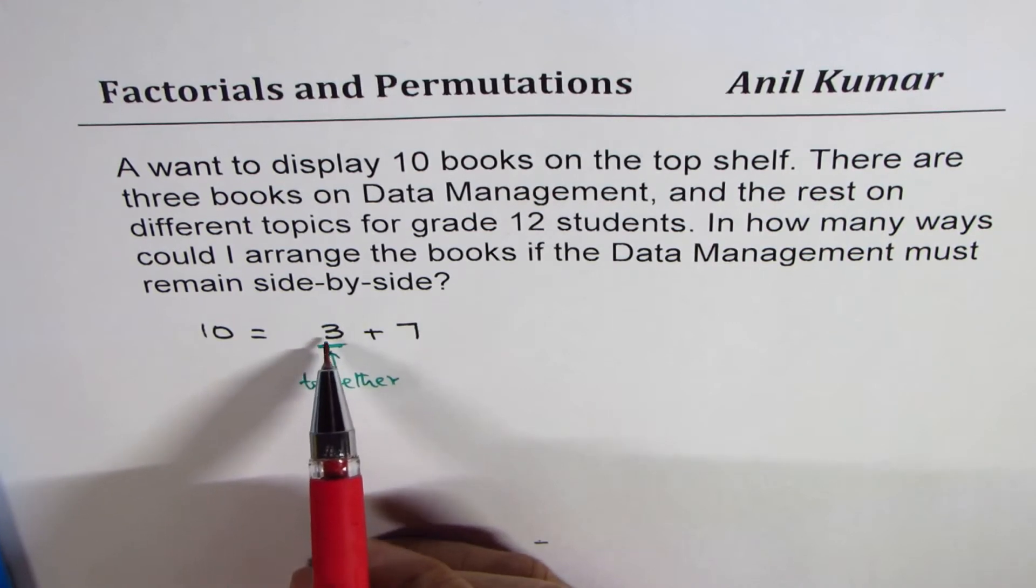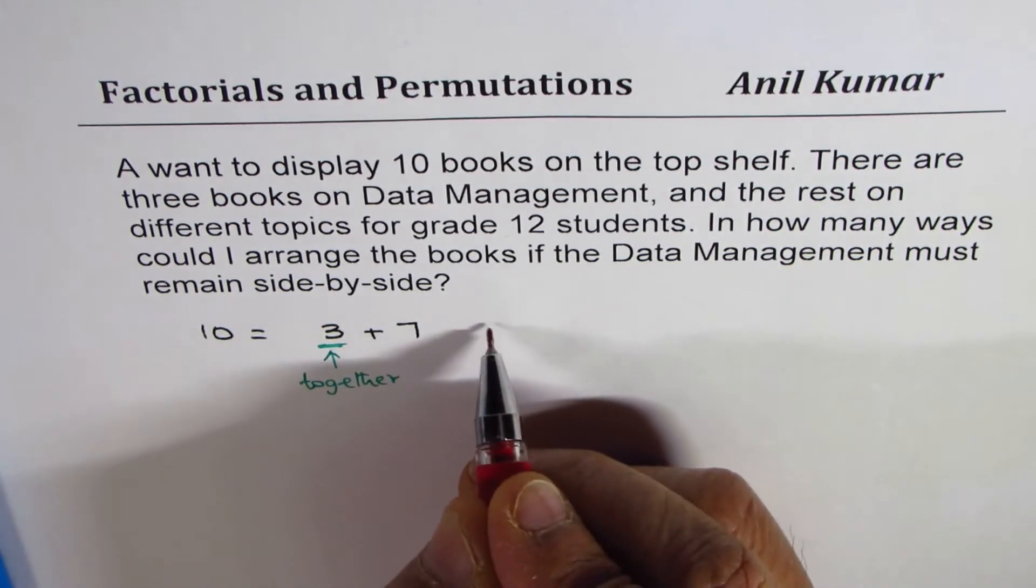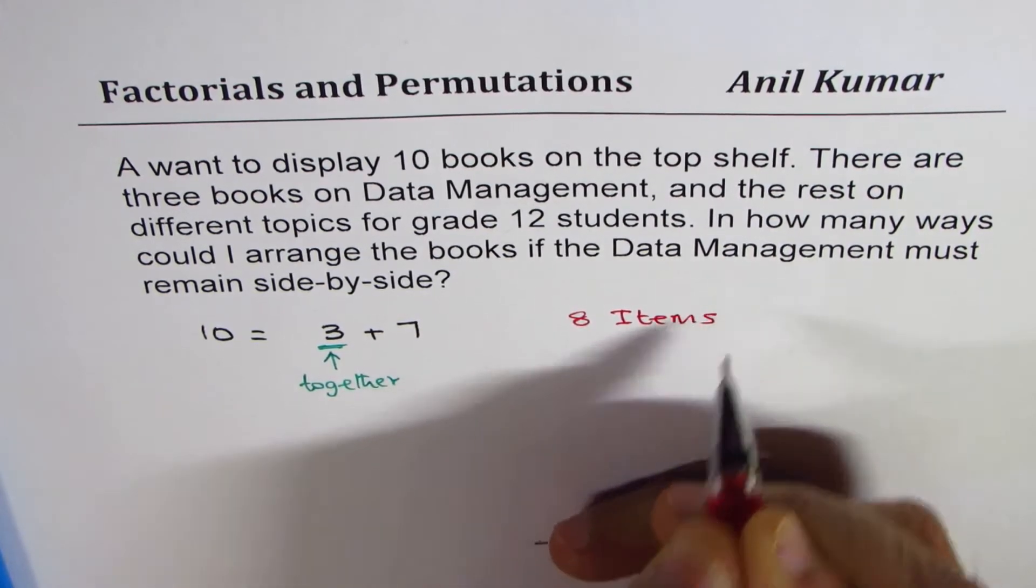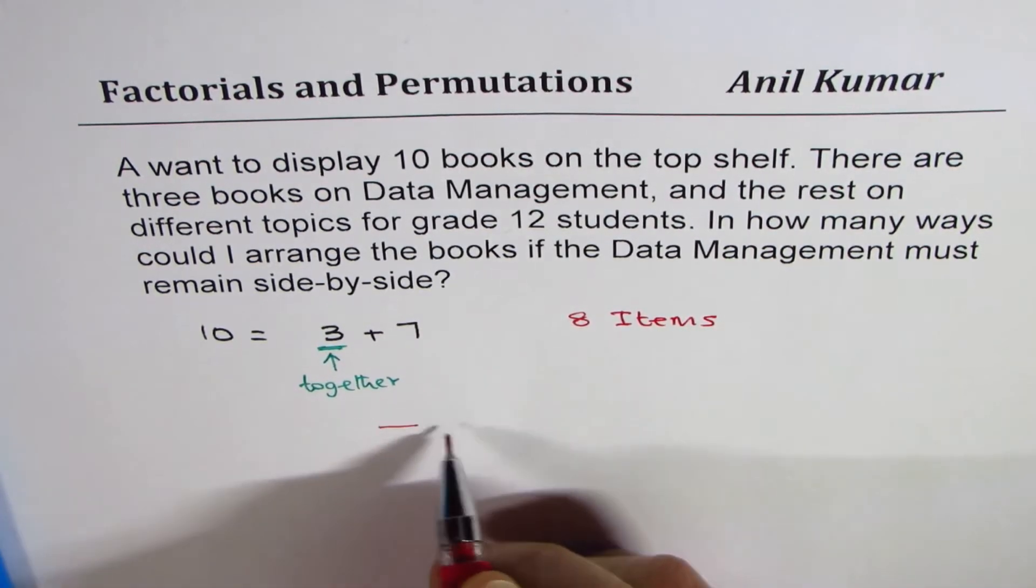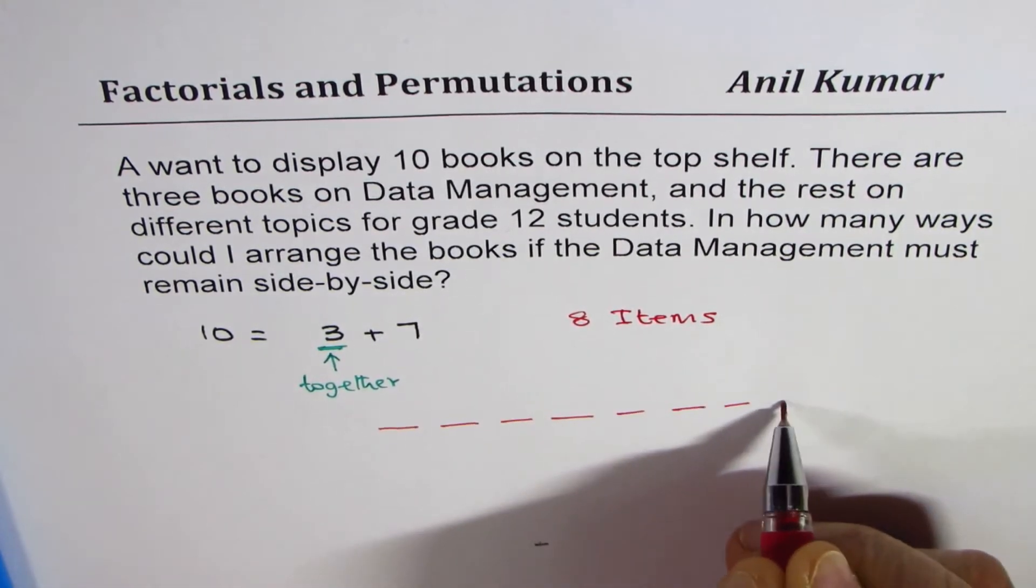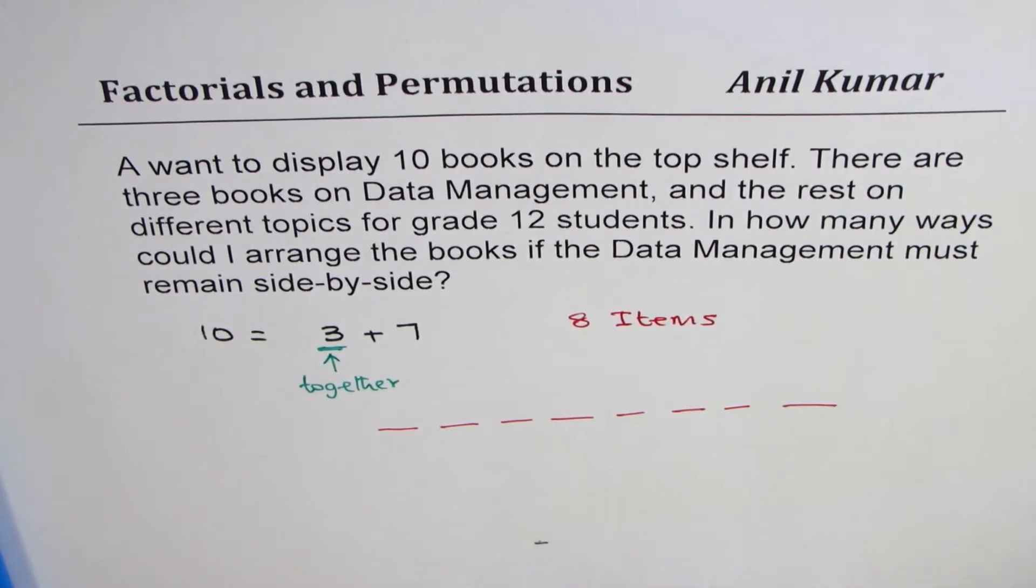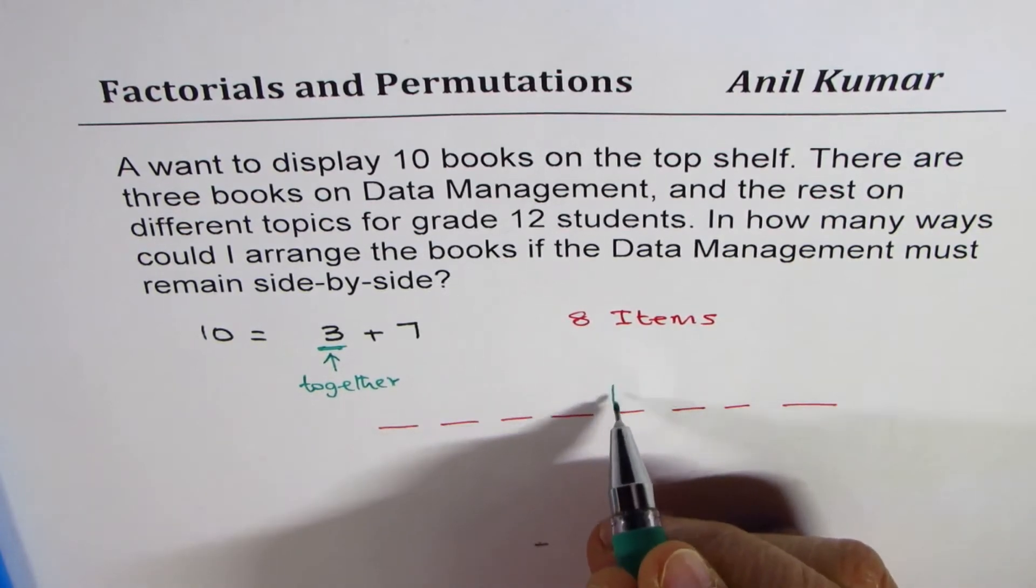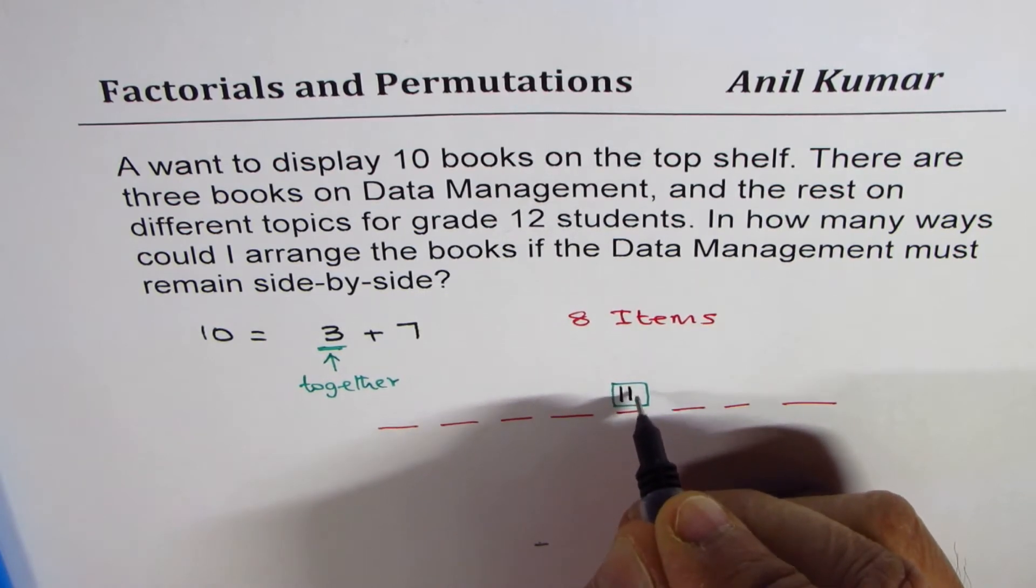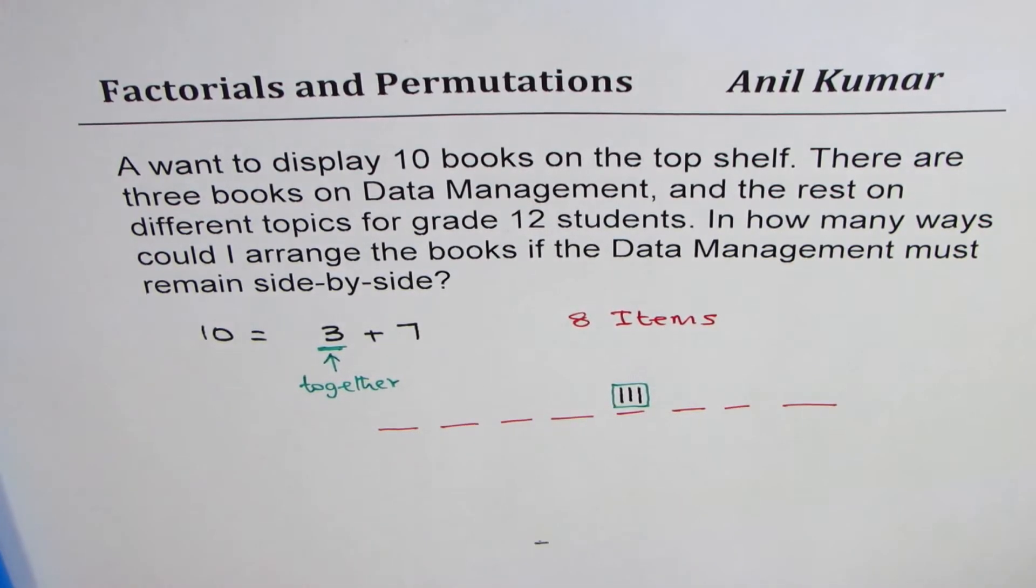In that case, we are left with 8 items, right? So, basically, we are looking for 8 items to be arranged. So, let's say these are the 8 items: 1, 2, 3, 4, 5, 6, 7, 8. Out of these, one of them is kind of a box where we have three books, three different books. Think like this.